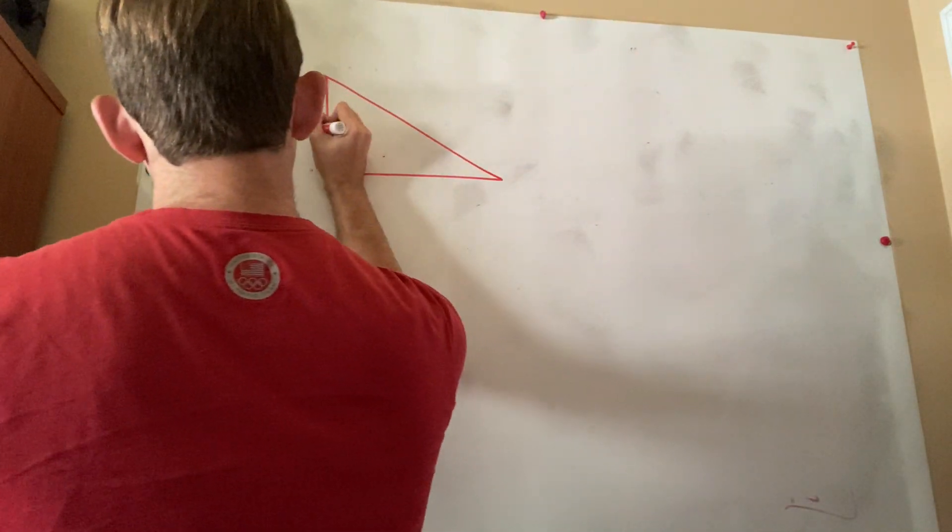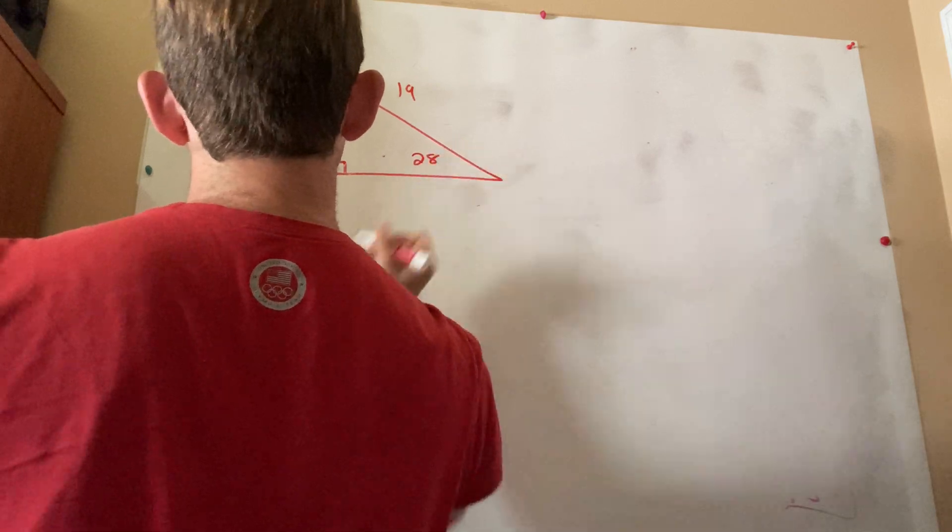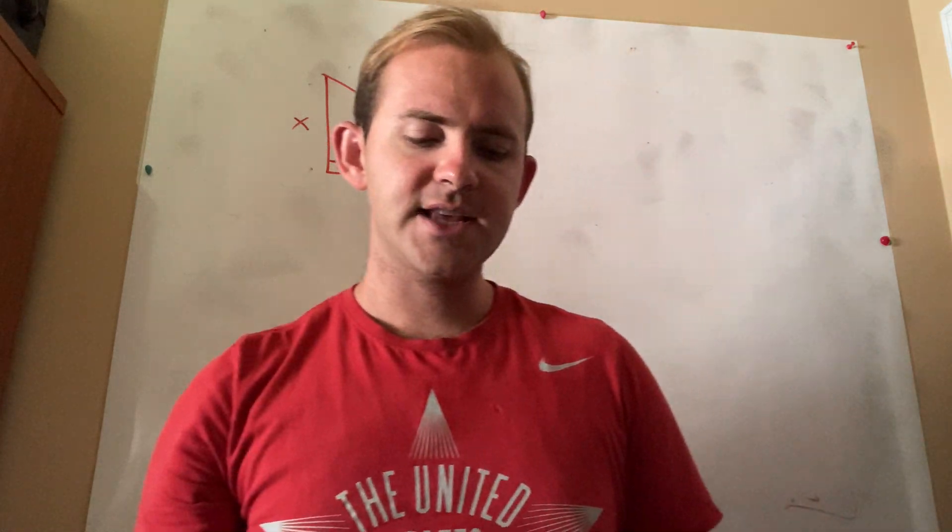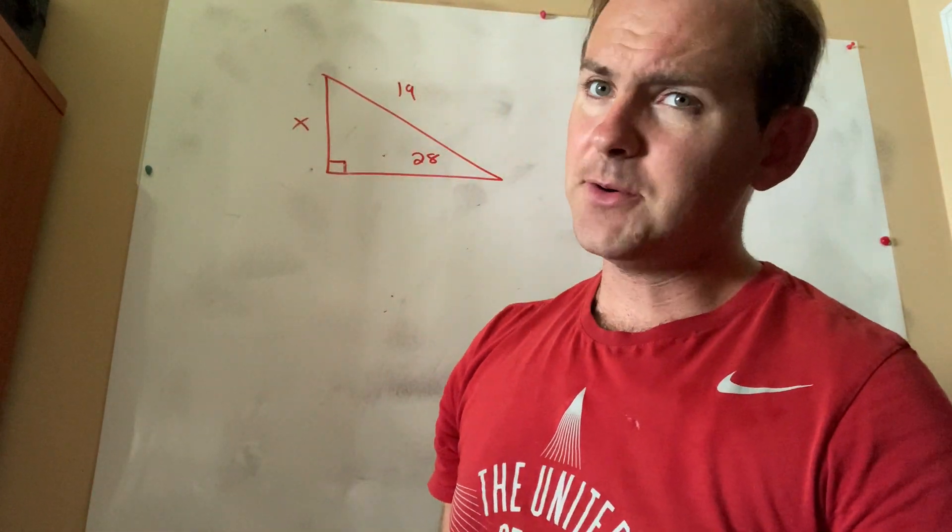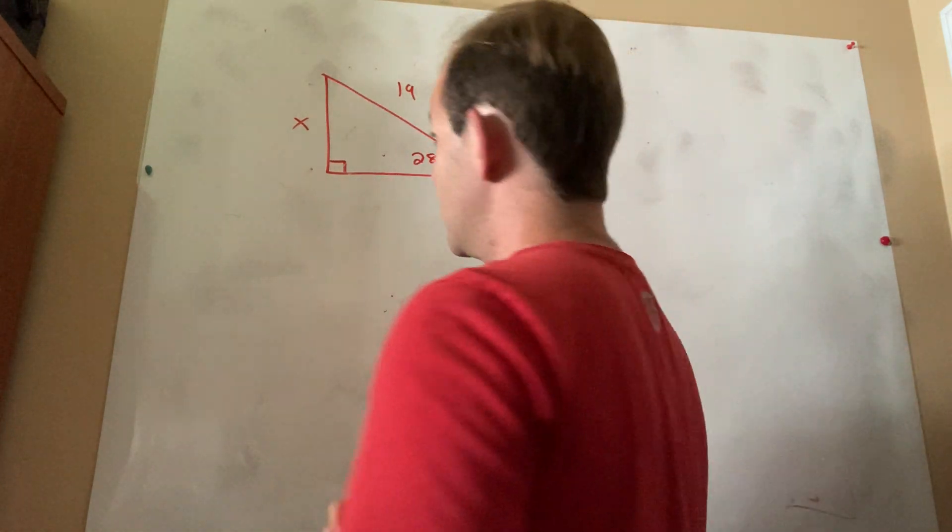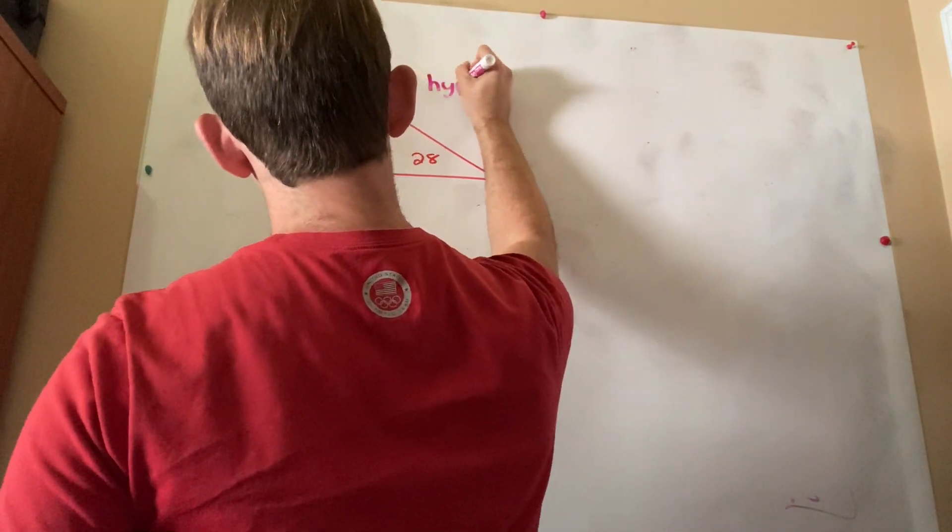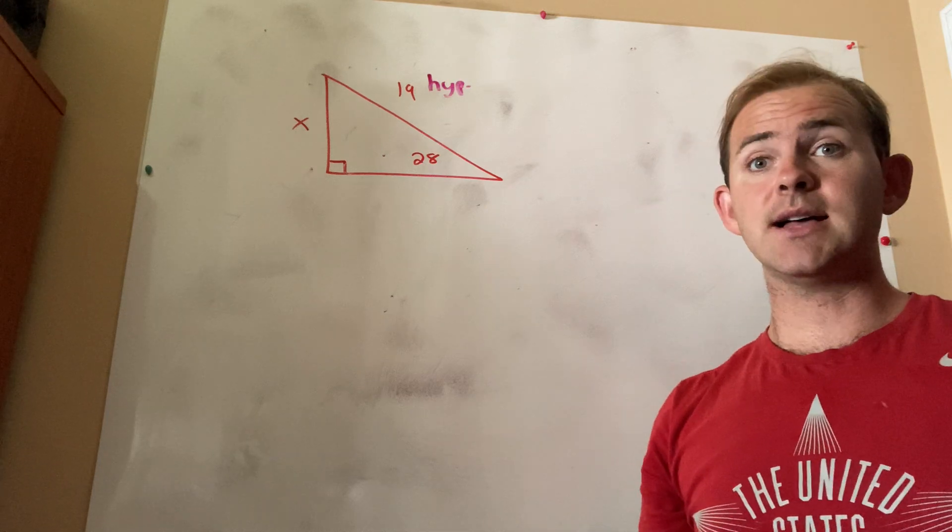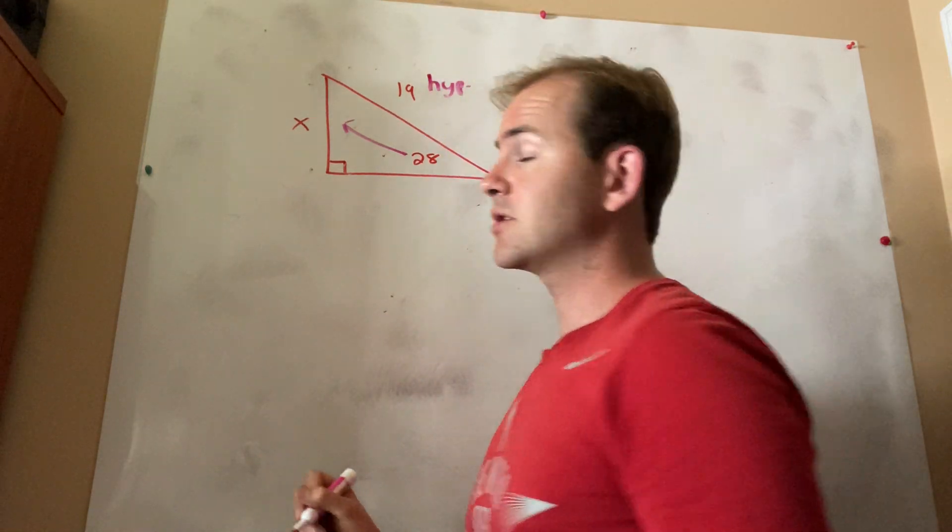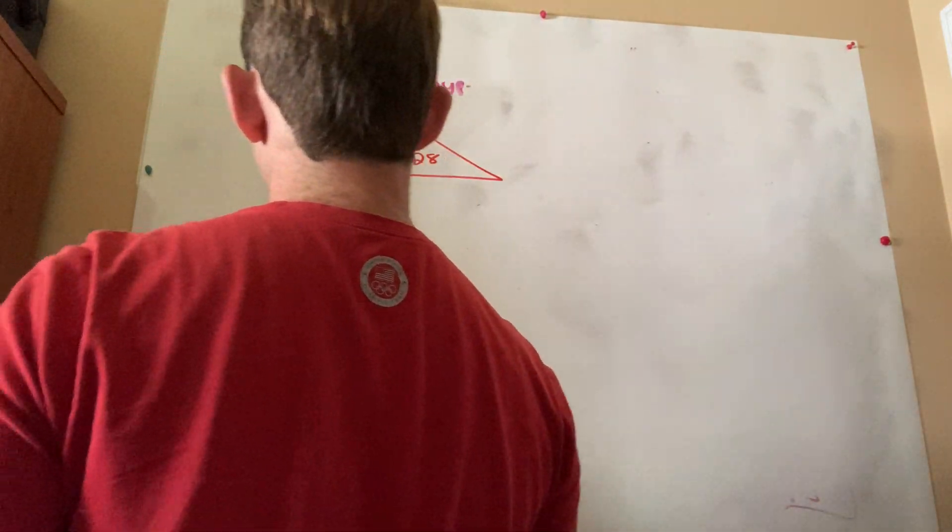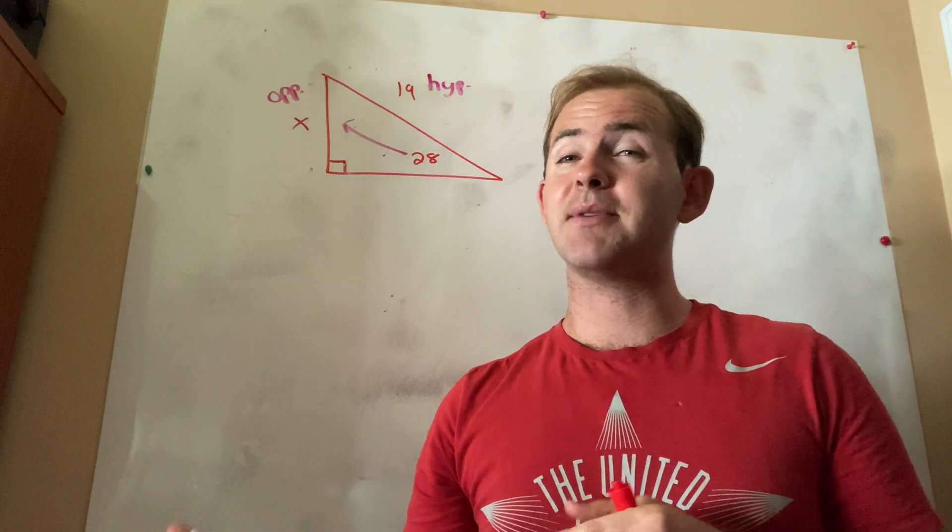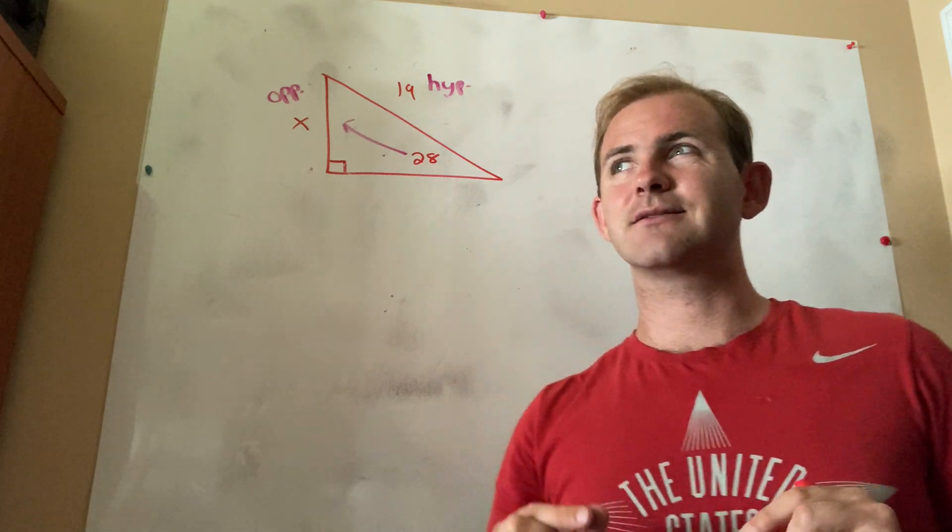So for number 4, we're given a right triangle, X, 19, and 28. Now, in order to find that unknown side, the first thing I'm going to do is I'm going to label. I don't need to label all three sides. I only need to label what they gave me and what I'm looking for. So this over here, what they gave me was the hypotenuse. This one that I'm looking for is across from the 28, so I would call that the opposite. Now, let's think together. Which of the trigonometric ratios uses both opposite and hypotenuse? The only one of the three is the sine ratio.